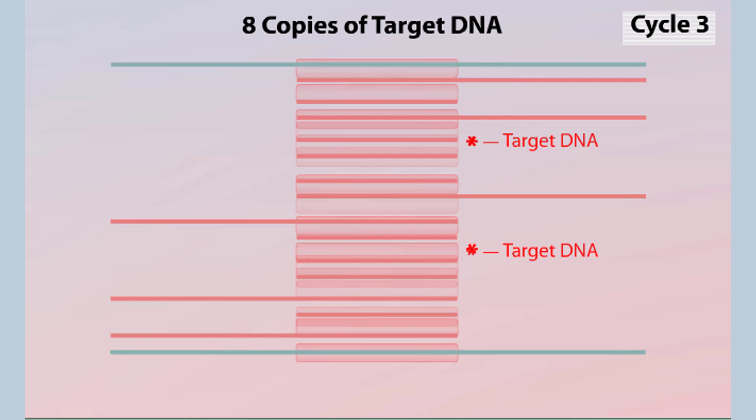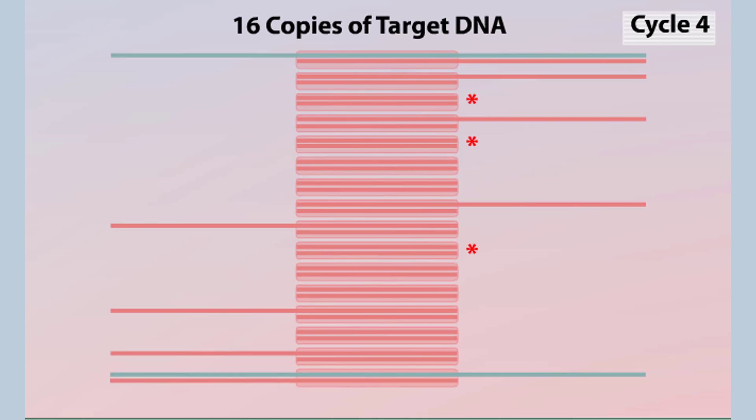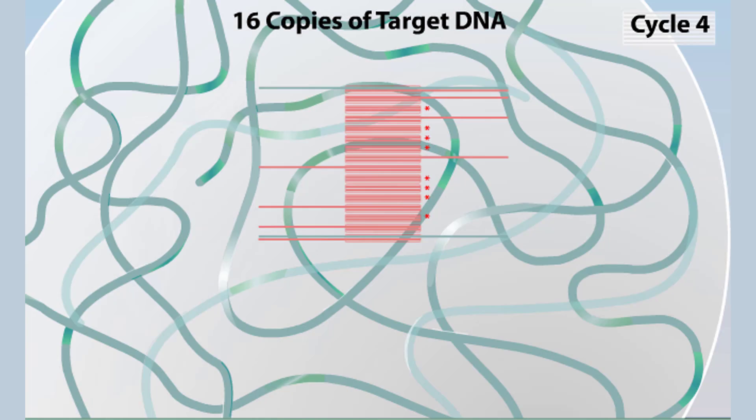As the number of cycles increases, the products consist of a greater proportion of fragments with just the target DNA. After four cycles, half of the fragments consist of just target DNA, and half of the fragments also contain flanking DNA.